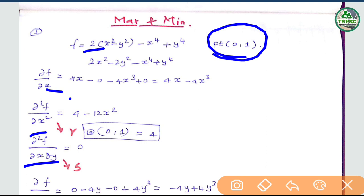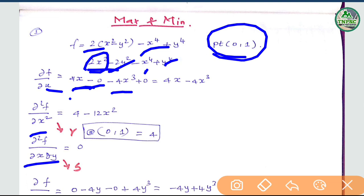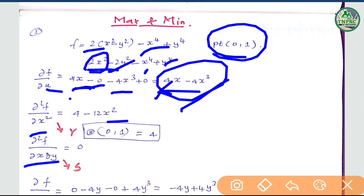So, df/dx — we will multiply first. We get 4x. When we differentiate, y² terms become constants with respect to x, giving 0. This gives us df/dx equal to 4x minus 4x³.